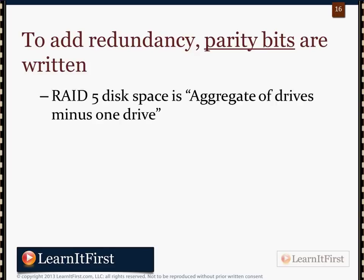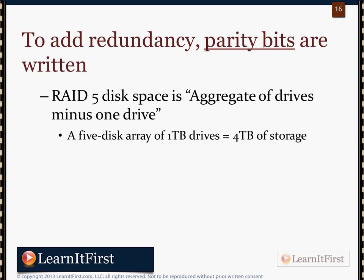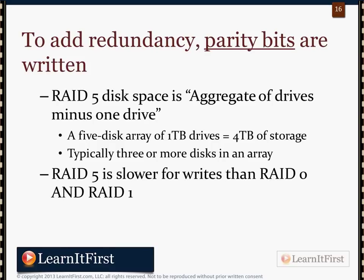RAID 5 gives us the speed benefit of striping plus the redundancy of RAID 1. The parity bits take up space equivalent to one drive. So the total usable disk space in a RAID 5 array equals all disk space minus the space of one drive. In a five-disk array with 4 TB drives, you'd have 16 TB usable — four of those terabytes go to the parity bits. You typically need three or more disks, and RAID 5 is slower for writes than RAID 0.